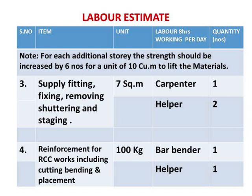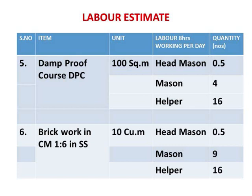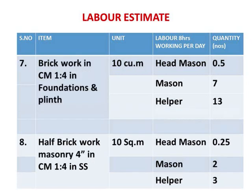For other concrete works and brickworks, coefficients are given based on standard practice. This includes damp proof course (DPC) and brickwork in cement mortar 1:6 in superstructure, brickwork in cement mortar 1:4 in foundation and plinth, and 4.5-inch brickwork in superstructure. The unit for 4.5-inch brickwork is 10 square meters, while the other brickwork unit is 10 cubic meters.